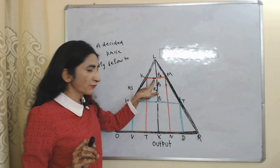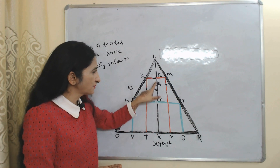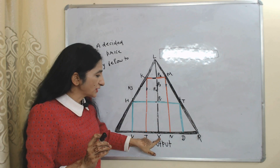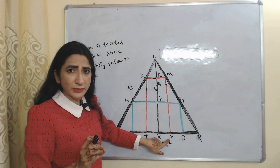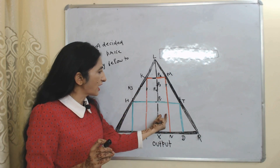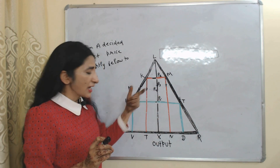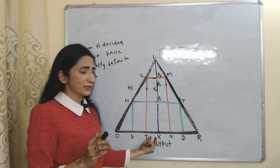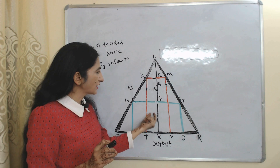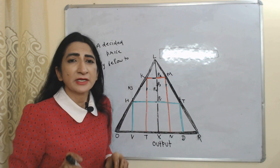Suppose initially both firms are charging xp2 price. At this price, firm A is producing x amount of output and earning profit equal to xp1 xp2 m — this part is called profit of A at xp2. Firm B is producing tx amount of output and earning profit equal to tkp2x — this part is called profit of B at xp2 price. Everything is going well.